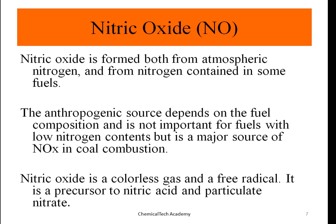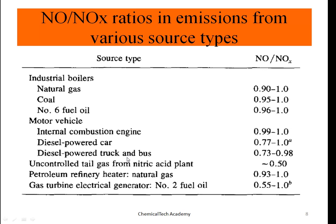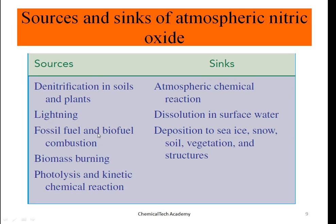Nitric oxide is a colorless gas and a free radical. It is a precursor to nitric acid and particulate nitrate. The NO-to-NOx ratio in emissions varies by source: for industrial boilers it is 0.9 to 1, for motor vehicles such as internal combustion engines it is nearly 100% (0.99 to 1), and for petroleum refinery heaters it is 0.93 to 1.